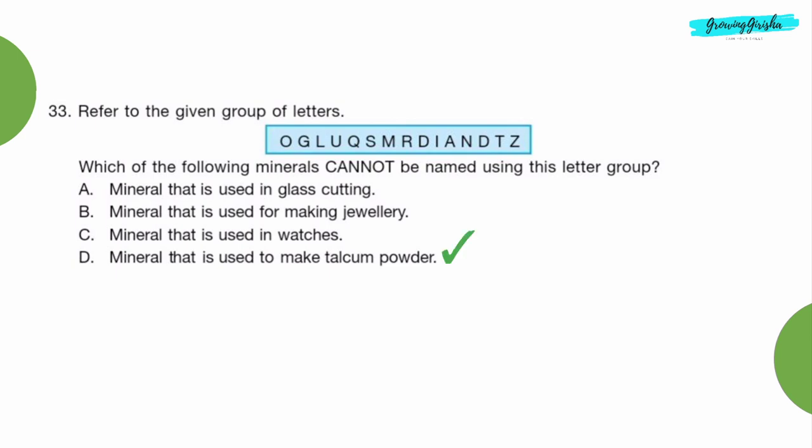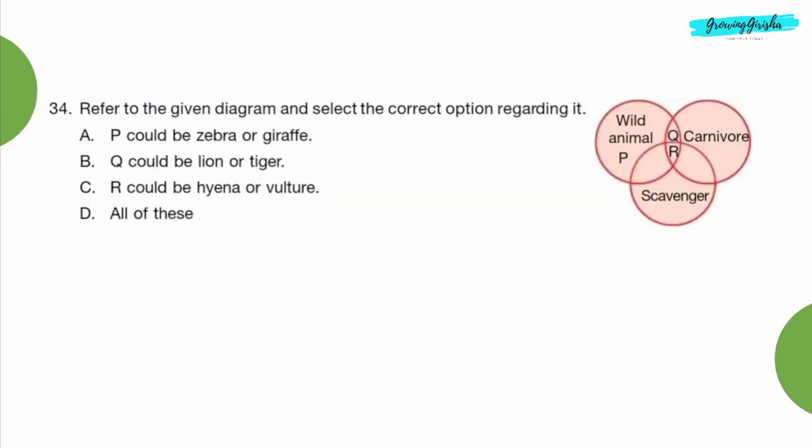Question 34: Refer to the given diagram and select the correct option regarding it. Option D, all of these.